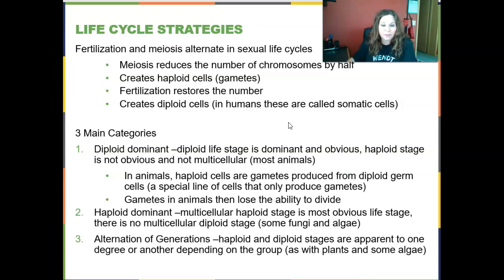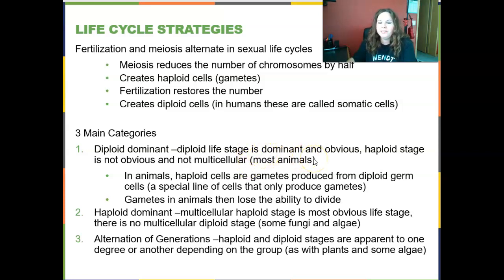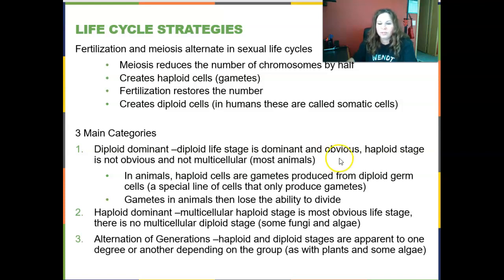There are three main categories of how sexual reproduction occurs. Strategy number one is diploid dominance, where the diploid life stage is dominant and obvious, and the haploid stage is not very obvious — that's animals. The haploid cells are gametes, created from diploid germ cells in the testes and ovaries through meiosis. Those gametes lose their ability to divide by mitosis and need to be fertilized to create the next individual. Strategy two is haploid dominance, where the multicellular haploid stage is most obvious — seen in many fungi and algae.